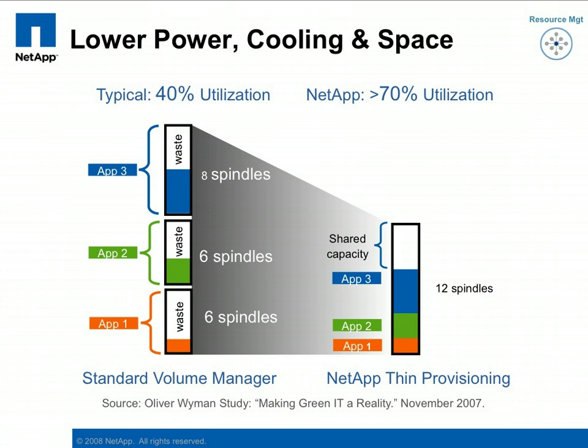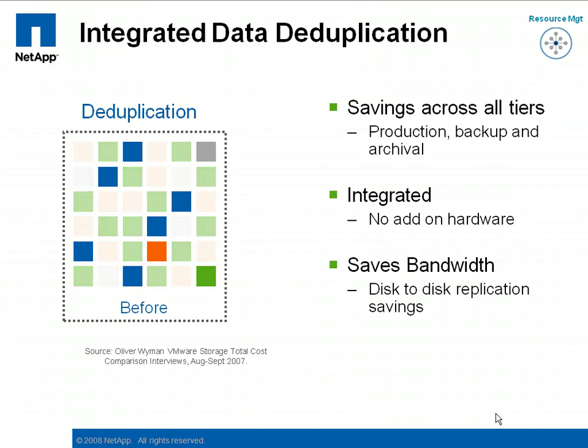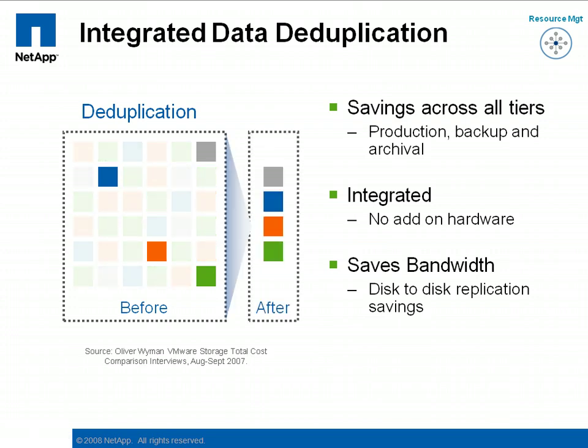Building upon the storage savings of thin provisioning, we offer data deduplication for production data sets. D-DOOP works by identifying and eliminating the redundant blocks of data stored on the array and making them available for reuse. With most VMware environments, the storage savings from D-DOOP commonly range from 50% to 70%.